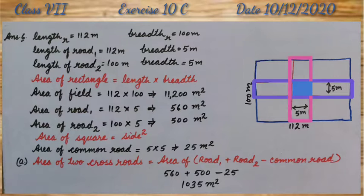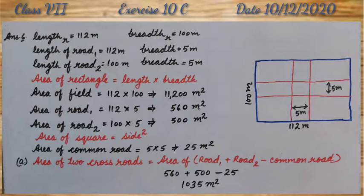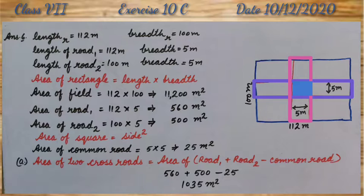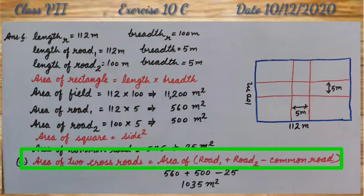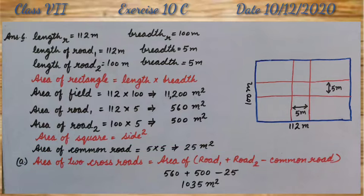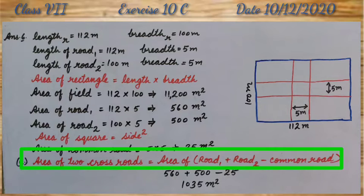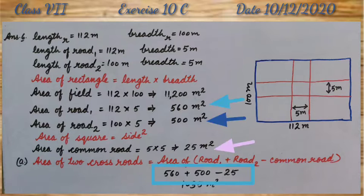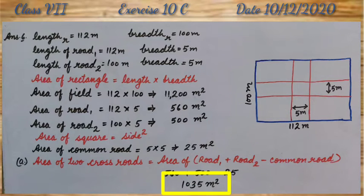When we see the horizontal road and vertical road, the center part we are finding twice. So, when we are finding the area of crossroads, we will subtract the area of common road once. Therefore, area of 2 crossroads is area of road 1 plus road 2 minus common road. It is 560 plus 500 minus 25. So, A part, area of 2 crossroads is 1035 meter square.